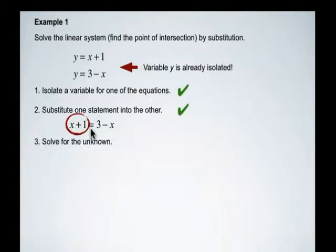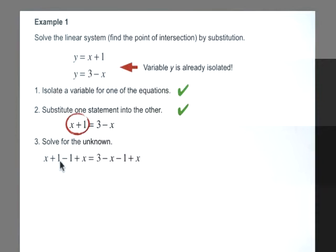So when you're solving for the unknown, this is your third step. The first thing you can do is add x to both sides. And so we've added x here and added x here to eliminate the x from the right-hand side of the equation.